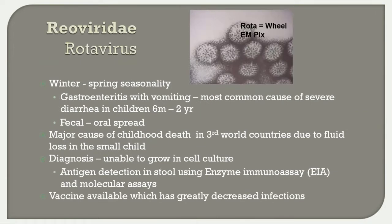Rotavirus (Reoviridae) occurs mostly in winter and spring, causing GI infection with vomiting and diarrhea — the most common cause of severe diarrhea in children 6 months to 2 years of age. It has fecal-oral spread and can be a major cause of death in third-world countries. It cannot be grown in cell culture; electron microscopy was historically used and shows a wheel-shaped viral particle. Antigen detection methods and molecular assays are now available. A vaccine has greatly decreased infections.